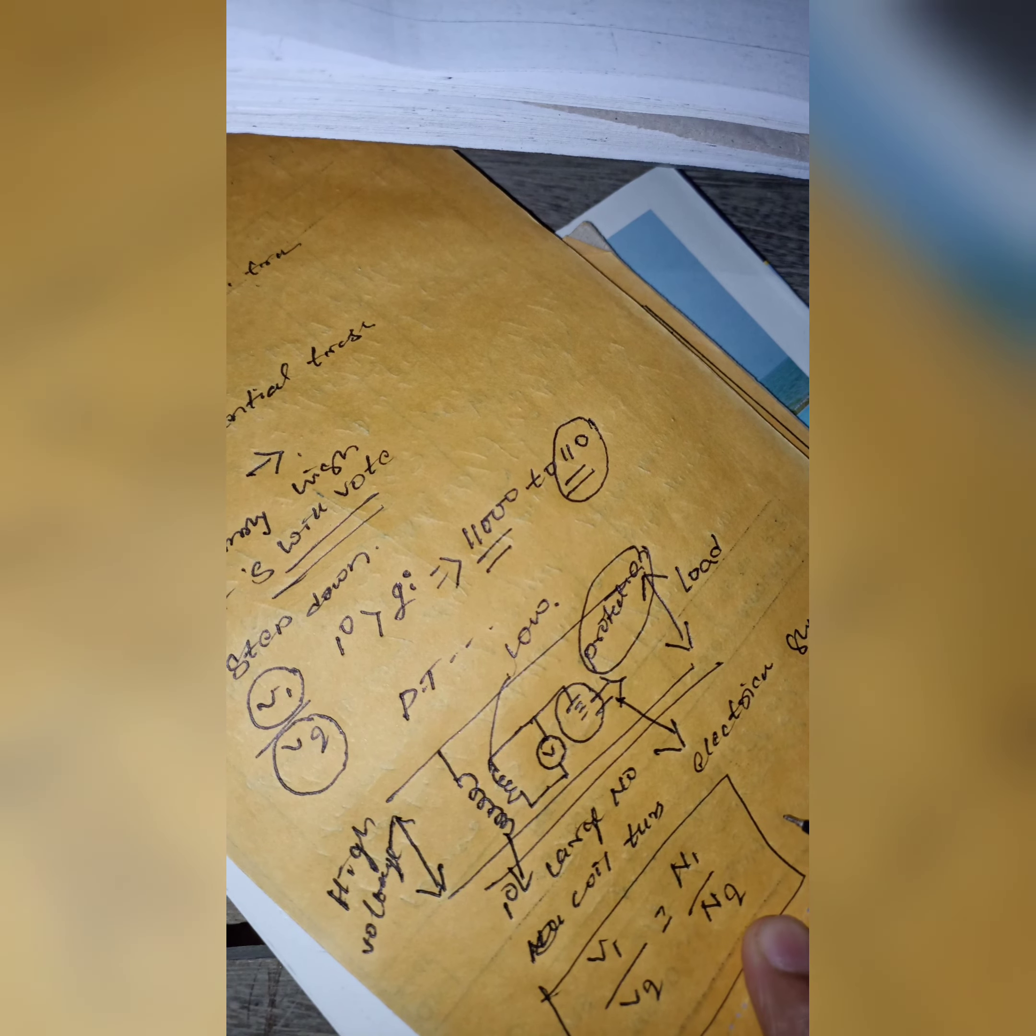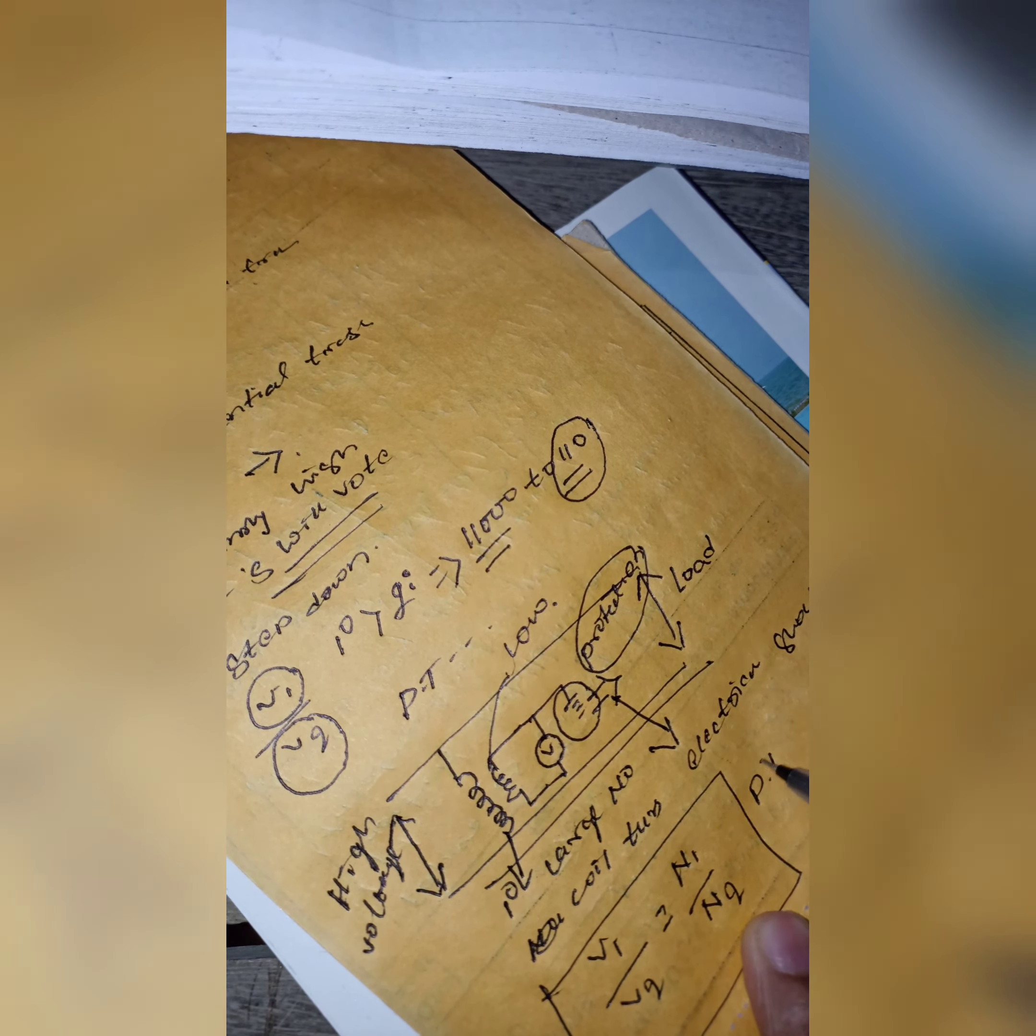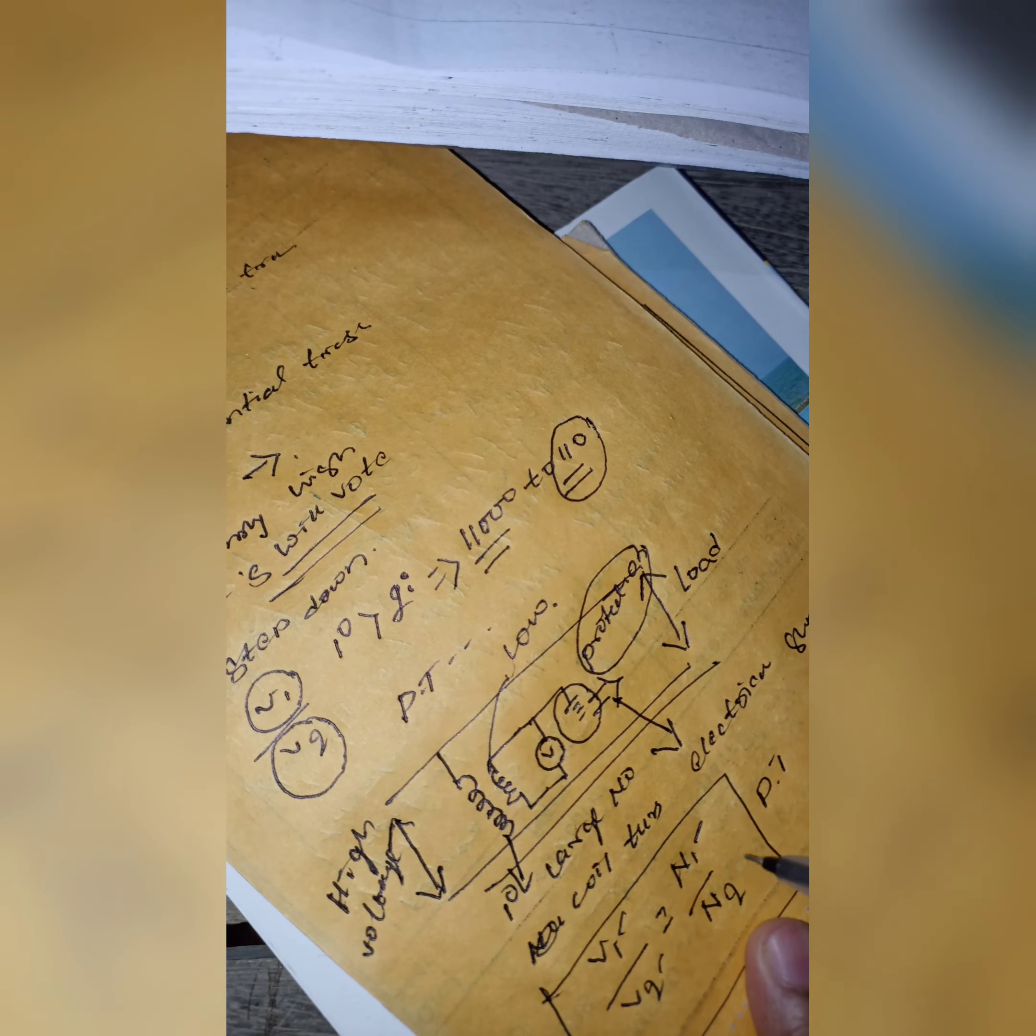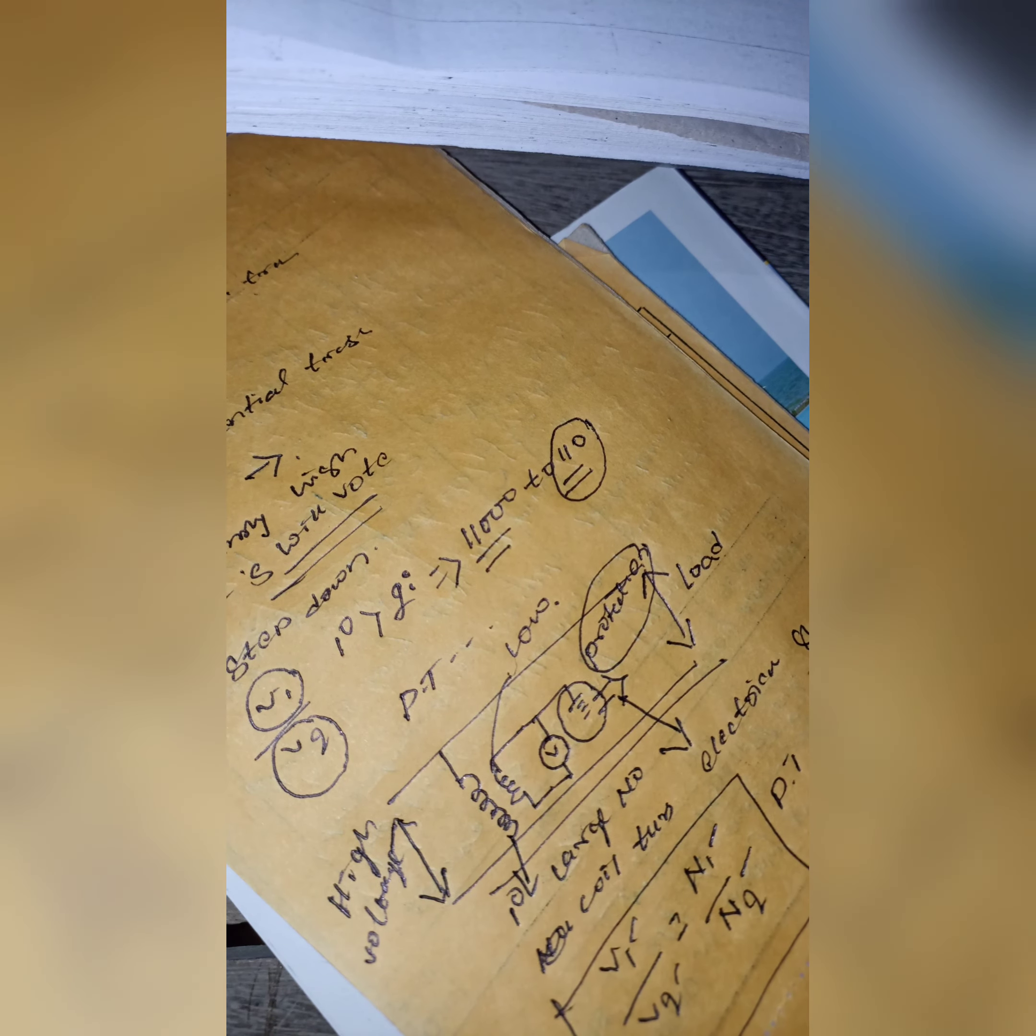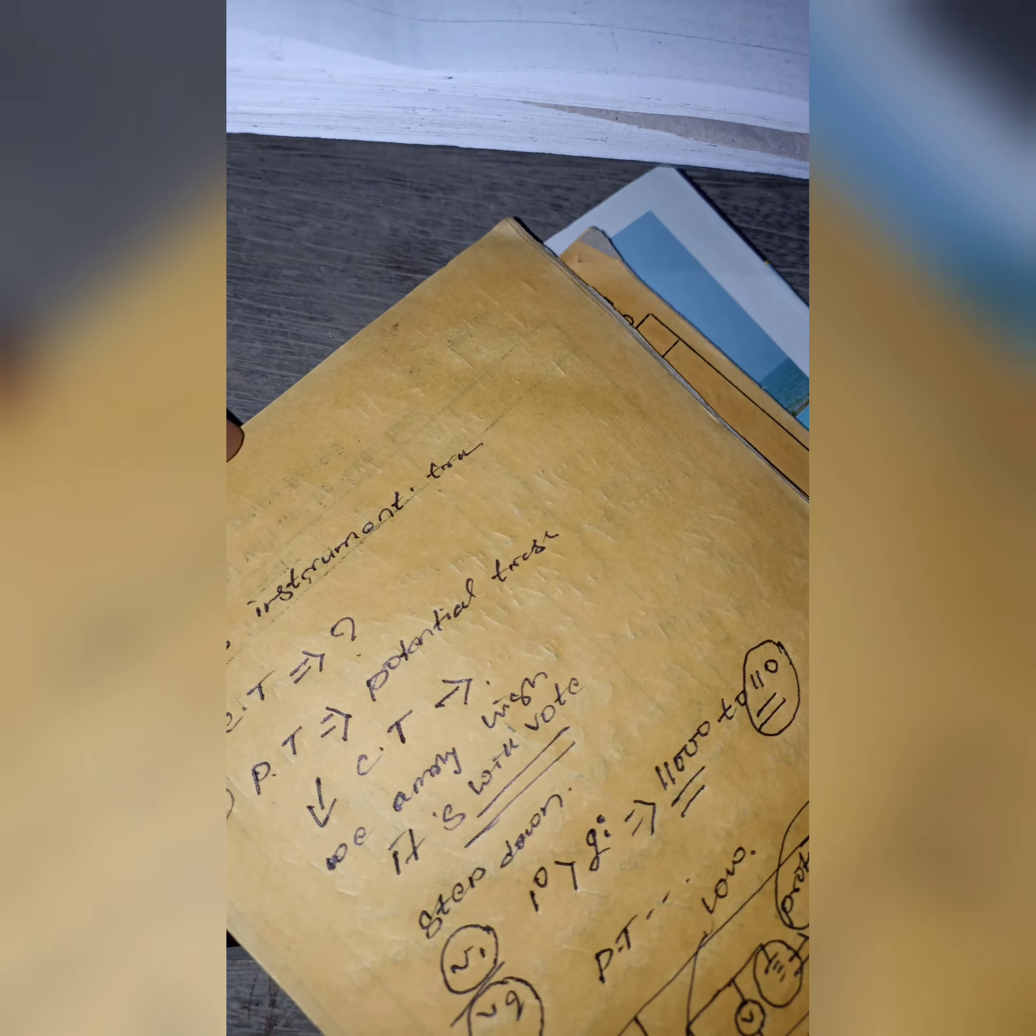And V1 by V2 equals N1 by N2. This is the voltage ratio of PT - voltage to number of turns. You can see by example.